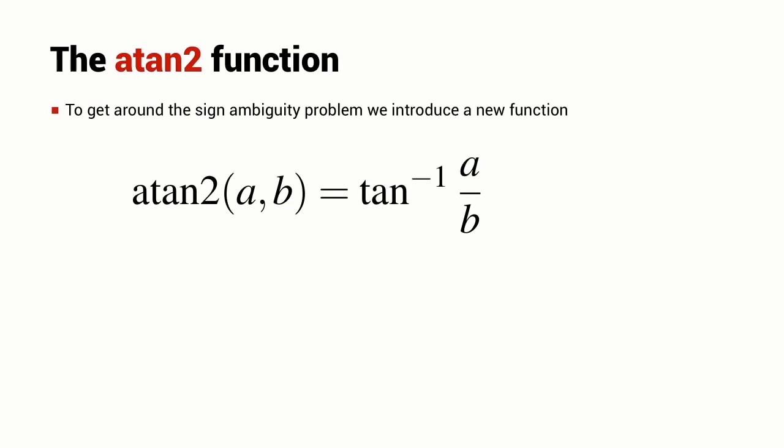To get around the problem, we introduce a new function and it's commonly called atan2. You'll find a function of this name in the mathematical library of many programming languages and you'll certainly find it in MATLAB. It takes into account the sign of a and the sign of b, and from that information it can determine which quadrant of the circle the angle lies within. So the range of this function is from minus pi to plus pi inclusive.